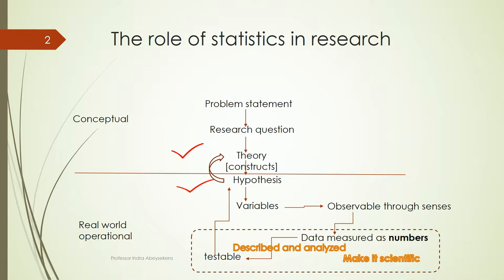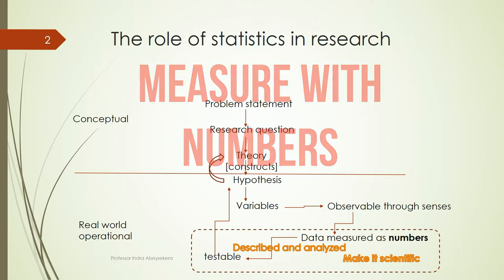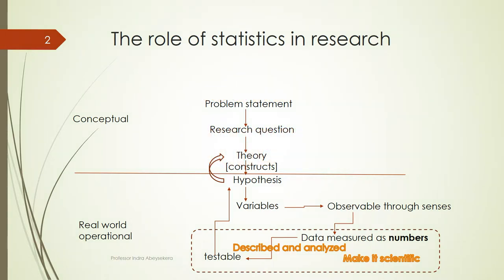The first thing about statistics in research is that we use numbers, because numbers make it objective, scientific, and testable. Later on, such testing could be undertaken by others, who can improve or falsify what we have found as things keep changing in the real world. And therefore, we can advance our knowledge.